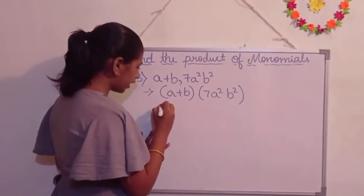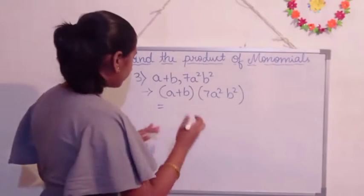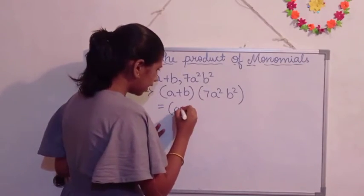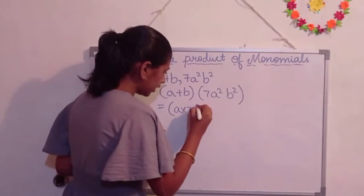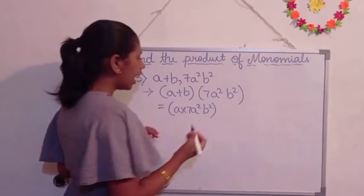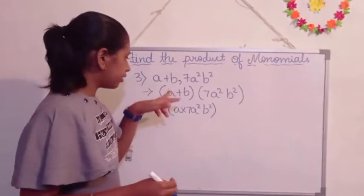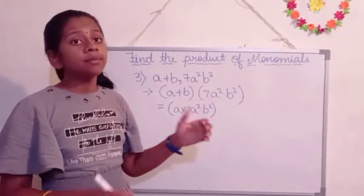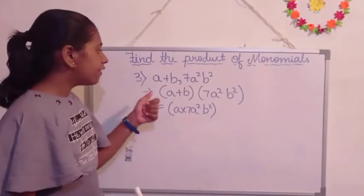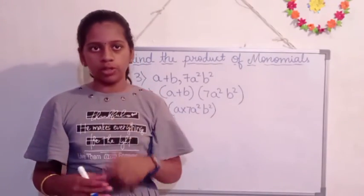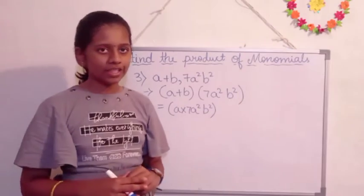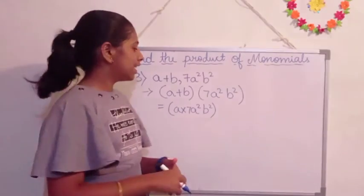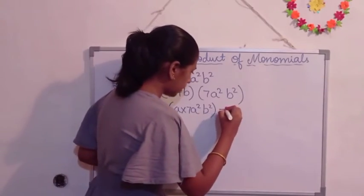So here we are going to write equals, and then we are going to write A into 7A square B square. I wrote here A into 7A square B square and I removed B because this is a monomial. Monomial multiplied by the binomial means first it should be multiplied by the first term only, not the second term. So here 7A square B square into A. A is the first term here. And then we are going to keep plus.